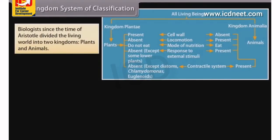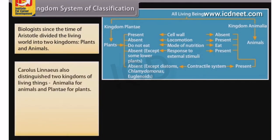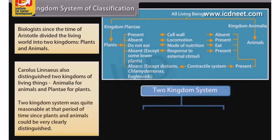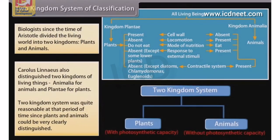The 2 Kingdom System of Classification: biologists since the time of Aristotle divided the living world into two kingdoms, plants and animals. Carolus Linnaeus also distinguished two kingdoms of living things — Animalia for animals and Plantae for plants. The 2 Kingdom System was quite reasonable at that period of time, since plants and animals could be very clearly distinguished.